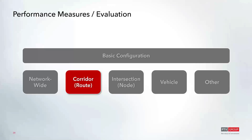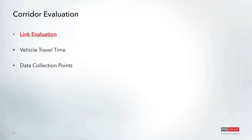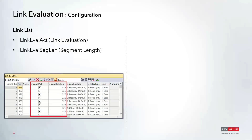Now from network-wide measures, we'll look at corridor measures. The corridor options include data collection along the roadway corridor — on links themselves, travel time information, or position-based data using data collection points. For link evaluation setup, each link has a couple of important evaluation attributes. Opening the link list and using the wrench icon to add attributes, the main evaluation ones are 'link evaluation active' and 'link evaluation segment length.' The active checkbox turns on data collection for that link, while the segment length determines over what link distance data will be gathered.